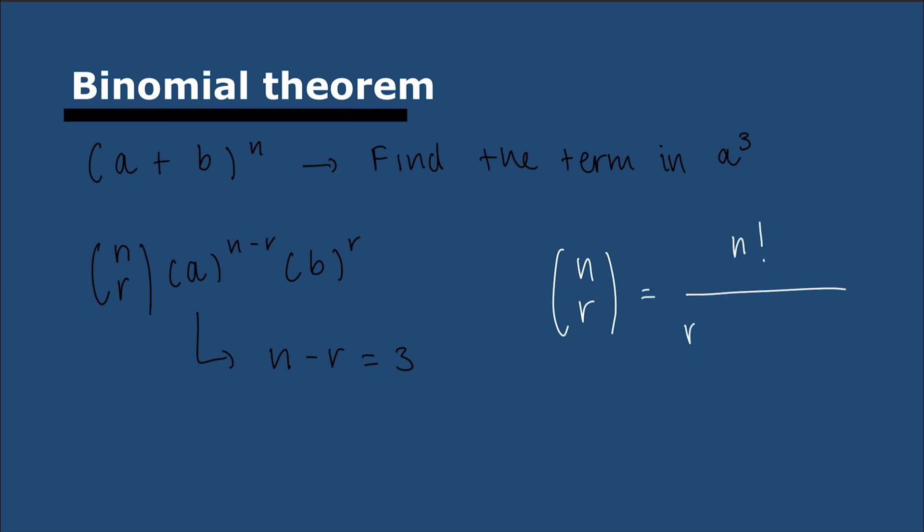For those of you who don't know, nCr is calculated by doing n factorial, which is n times (n-1) times (n-2), etc., over r factorial times (n-r) factorial.